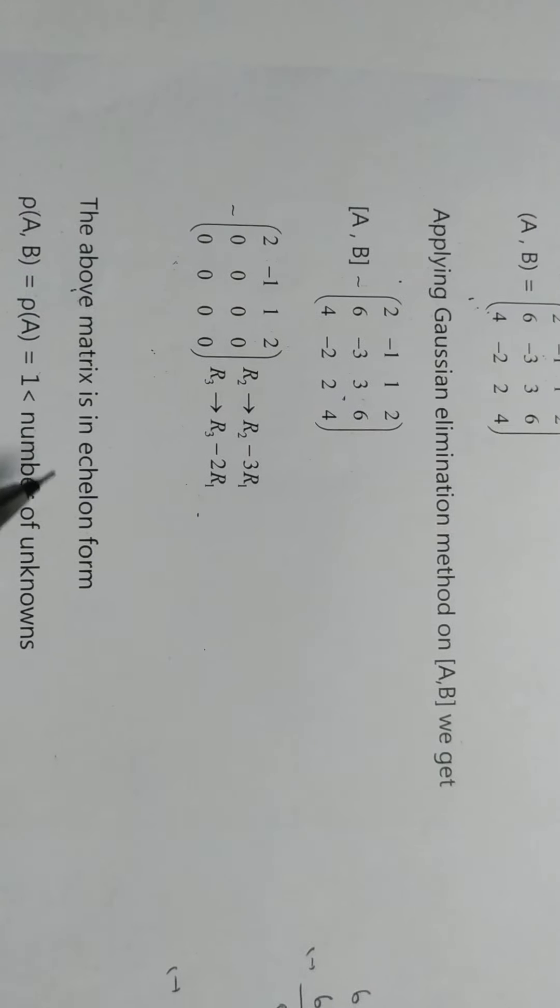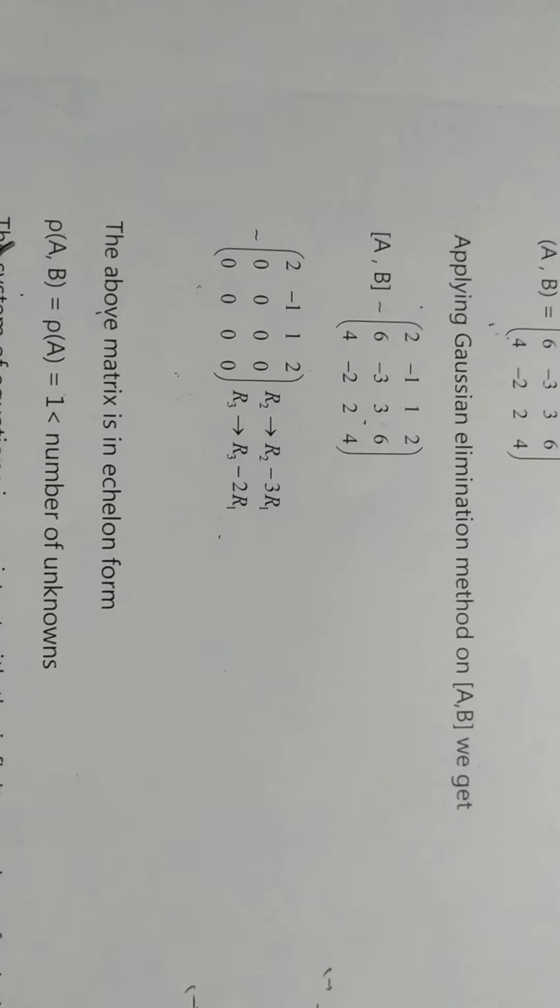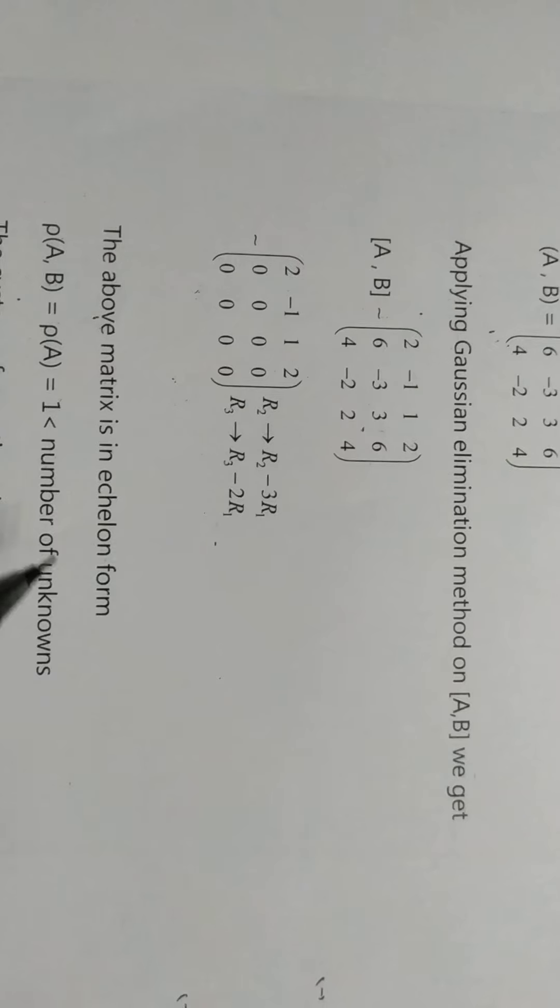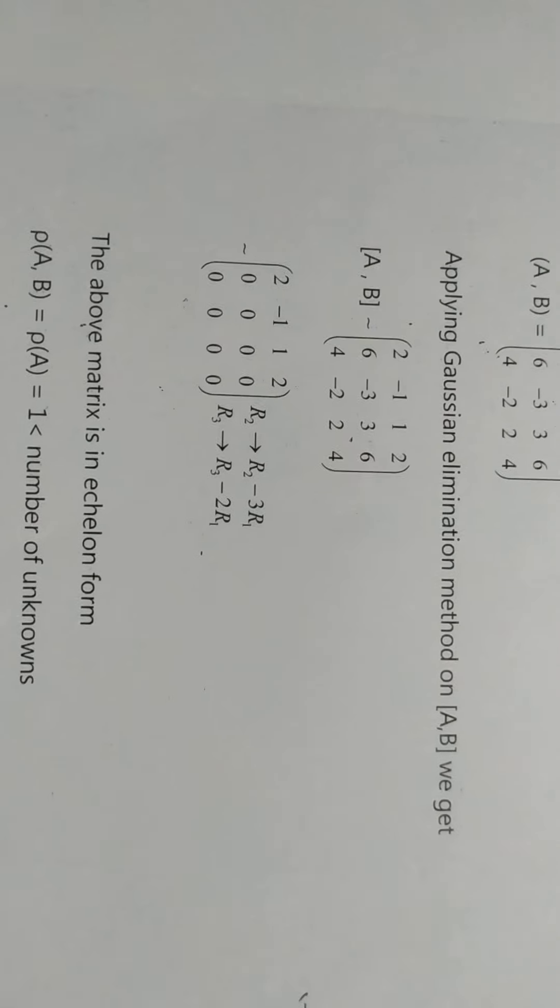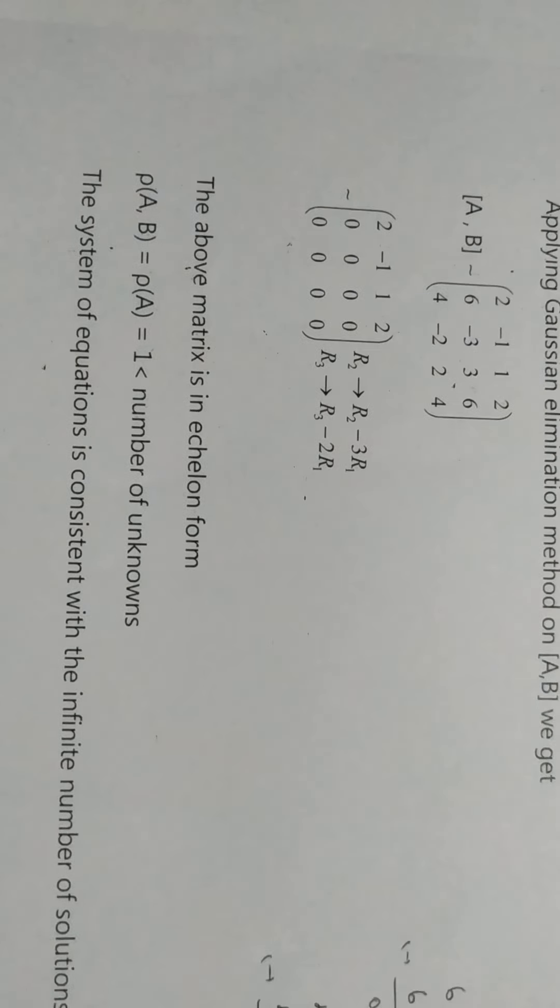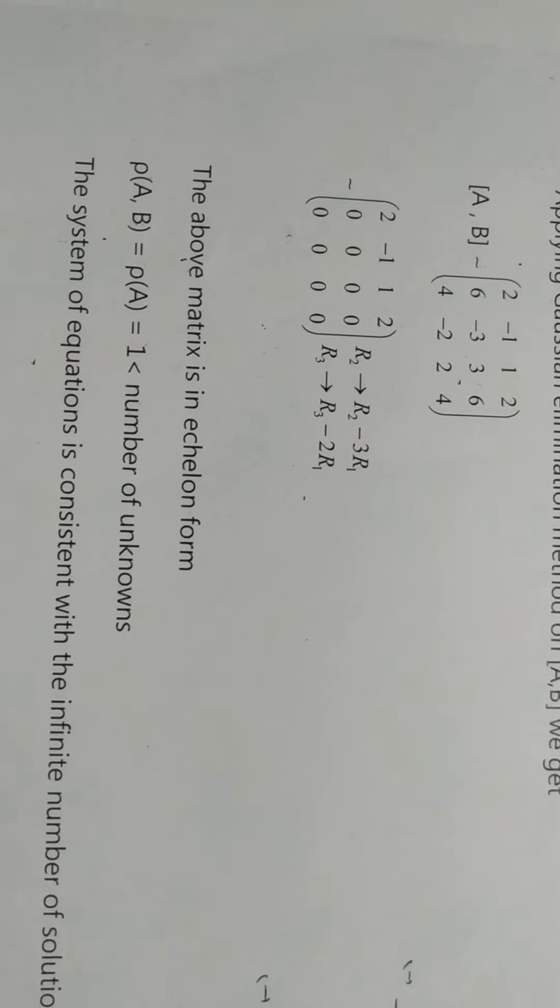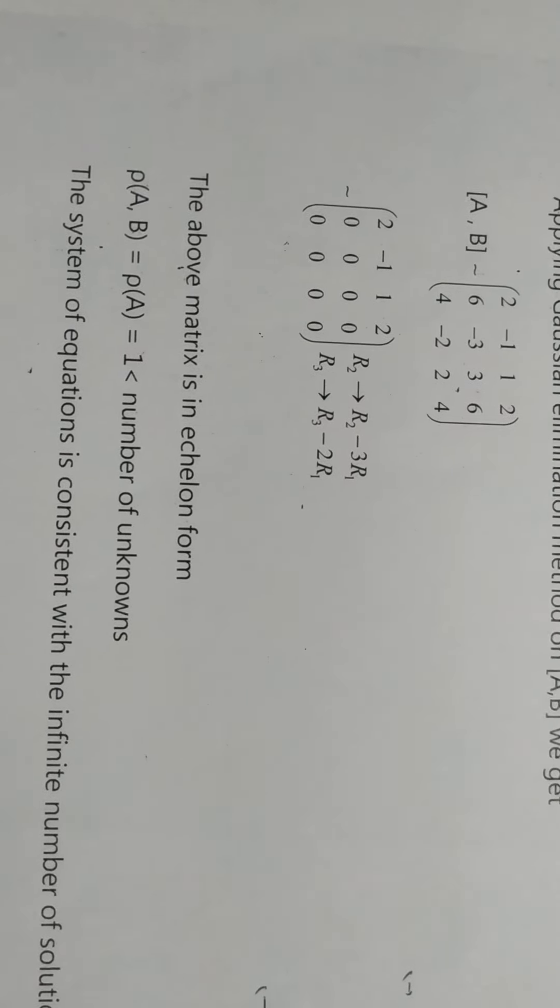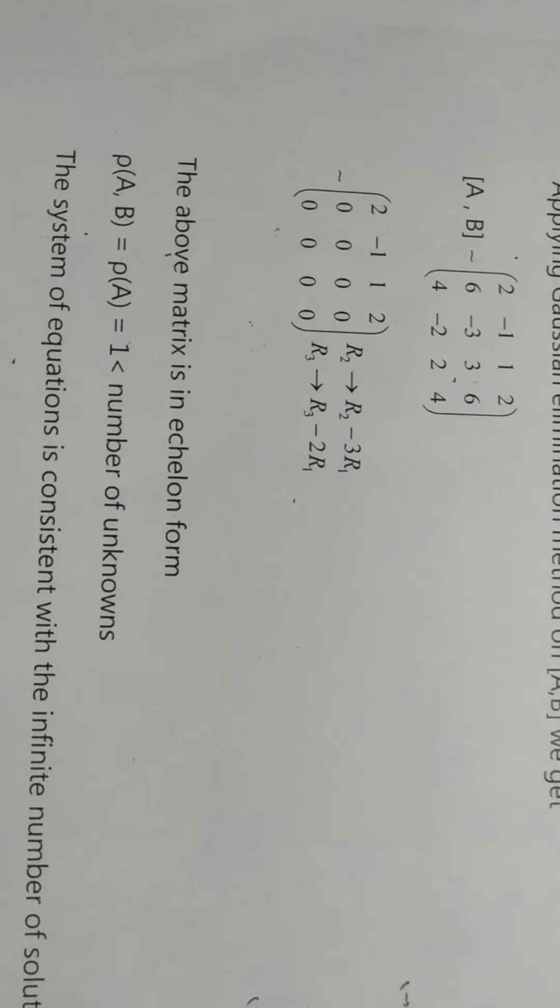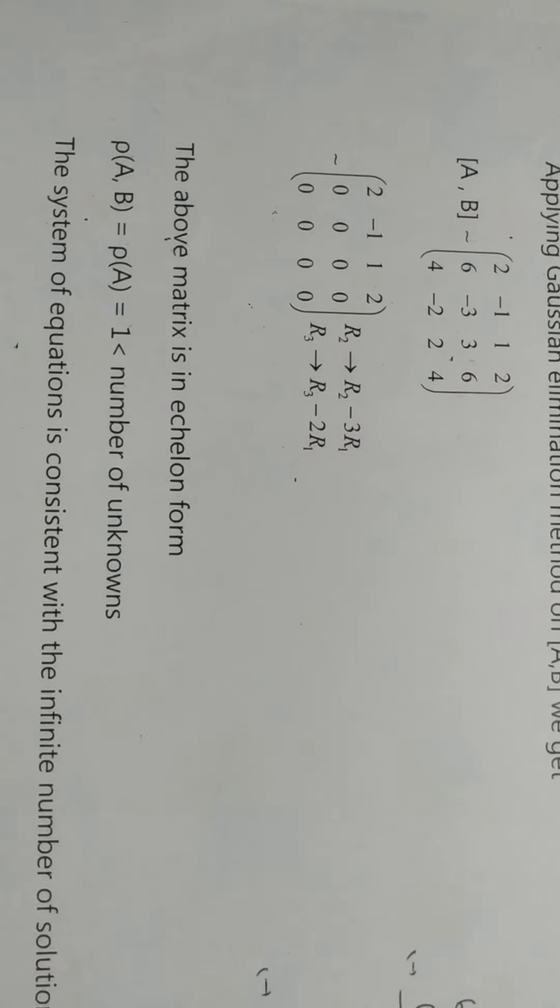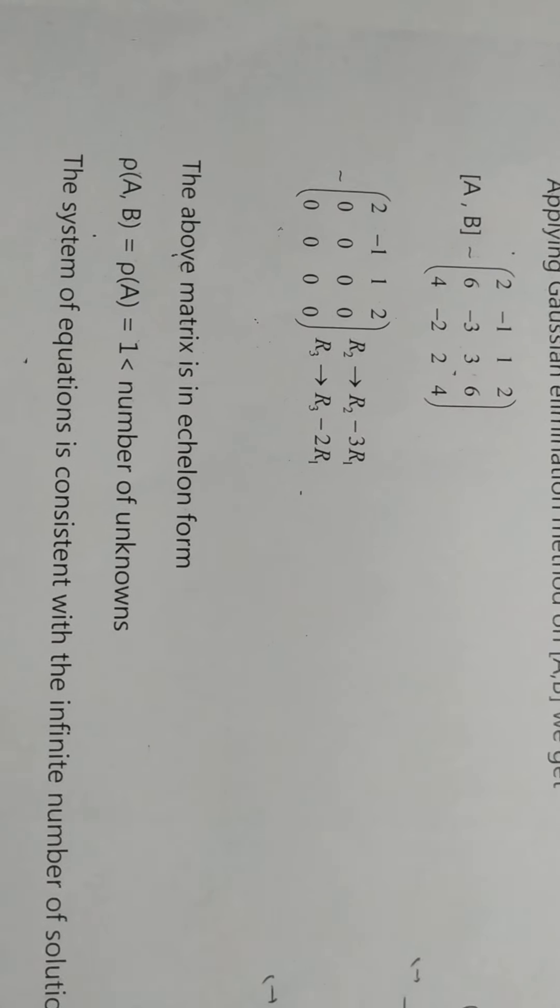The above matrix is in Echelon form. Rank of AB equals Rank of A equals 1, which is less than the number of unknowns. The system of equations is consistent with infinite number of solutions.